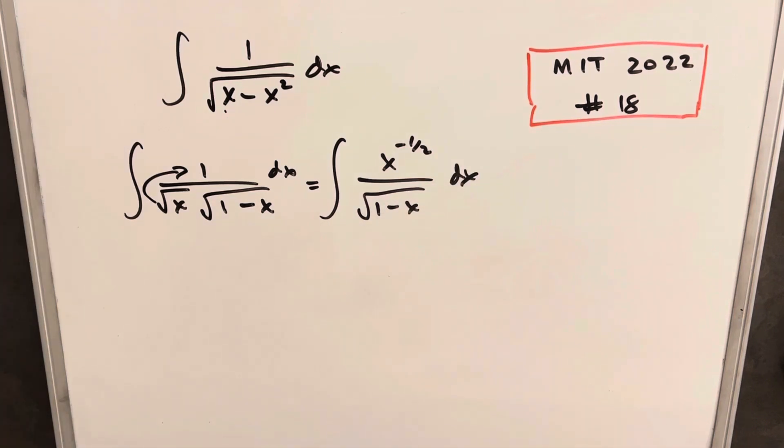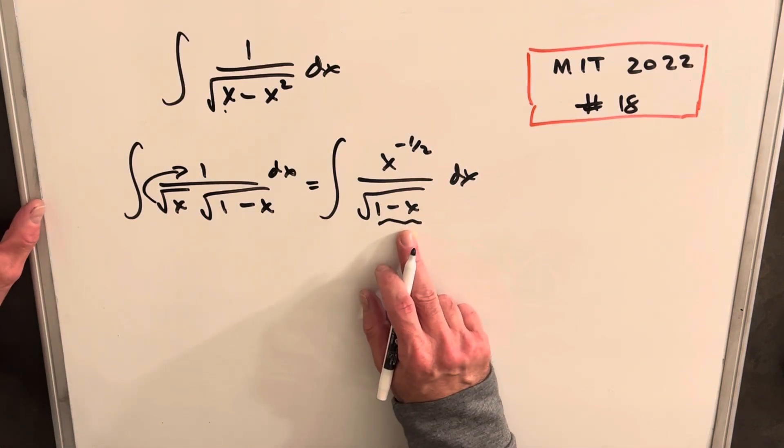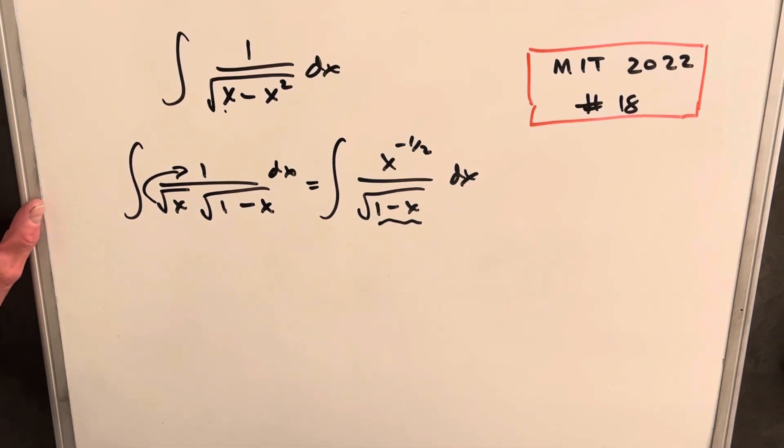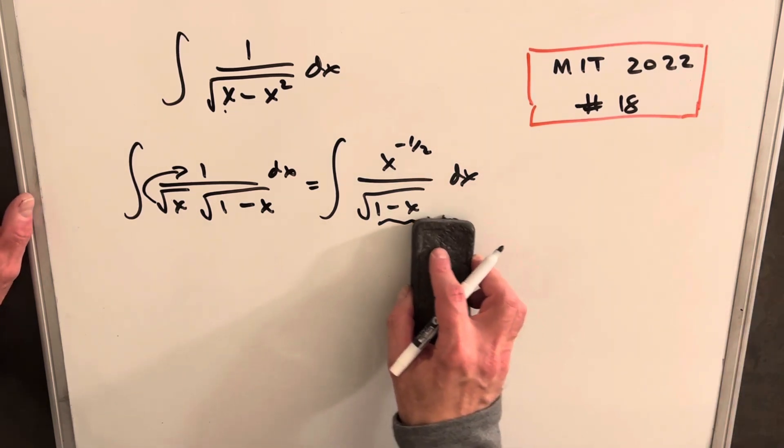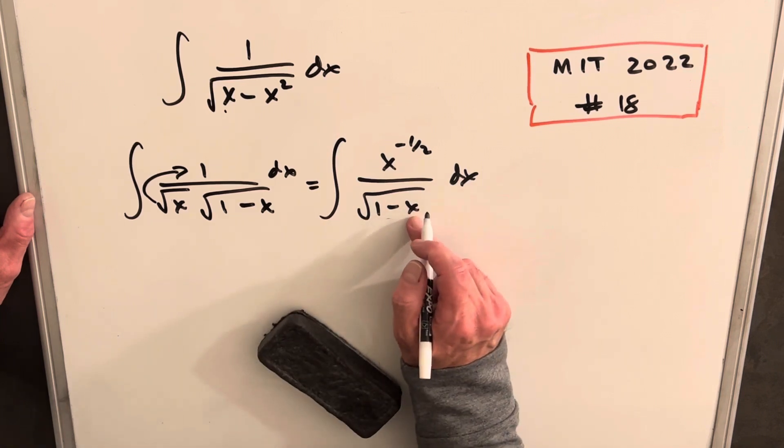Trouble here is we want to use a u substitution. And if I make this my u, you'll see that's not going to work because the derivative of that is just minus 1. So that's definitely not going to work. We want to get something with a half root. The other thing we want in our numerator, in our denominator here, is we usually want this to be squared.